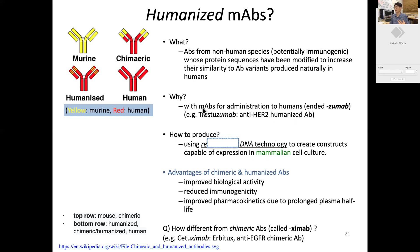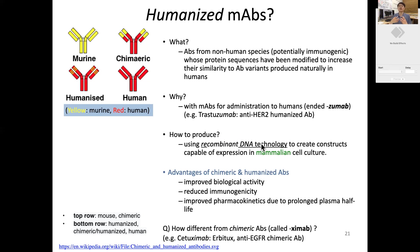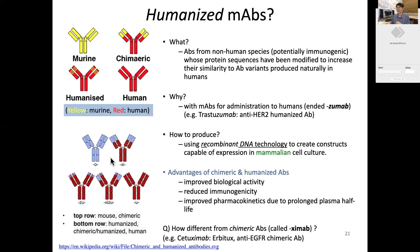To administer monoclonal antibodies to humans for clinical use, we create humanized or chimeric antibodies. Trastuzumab is an example of a humanized antibody — the suffix '-zumab' indicates humanized. These are produced using recombinant DNA technology to create constructs capable of expression in mammalian cell systems.